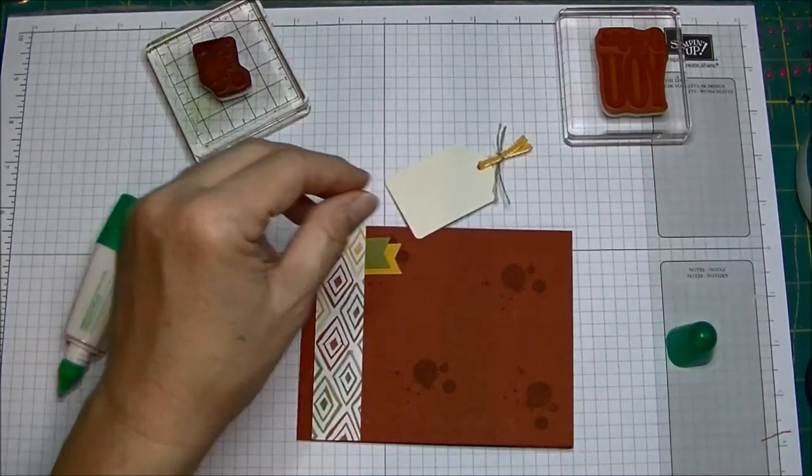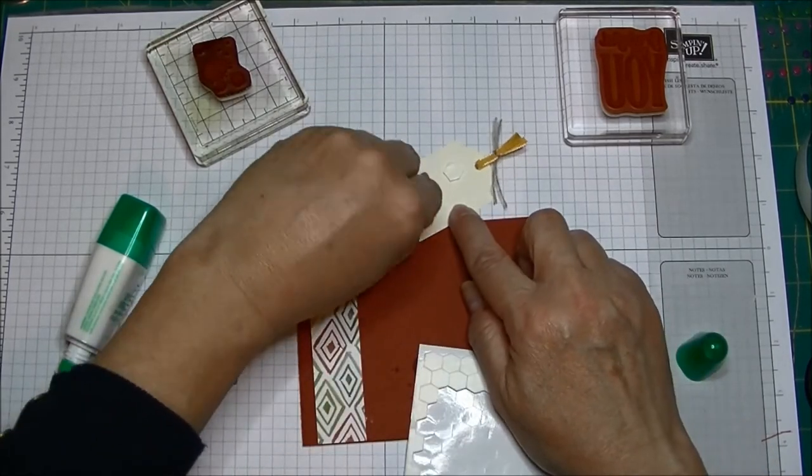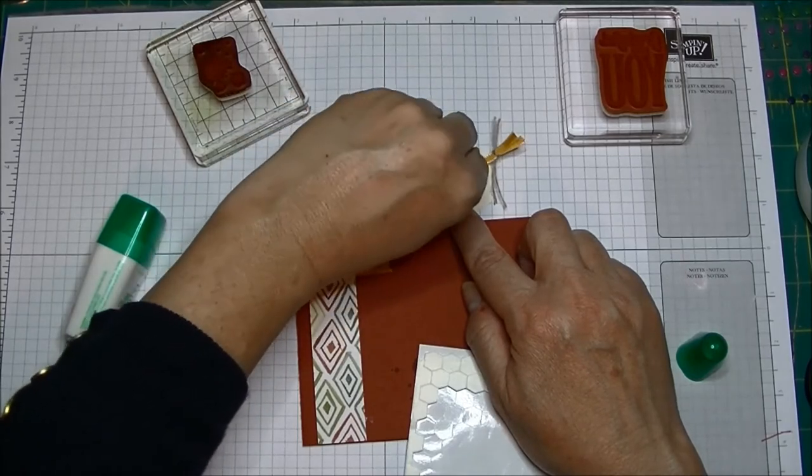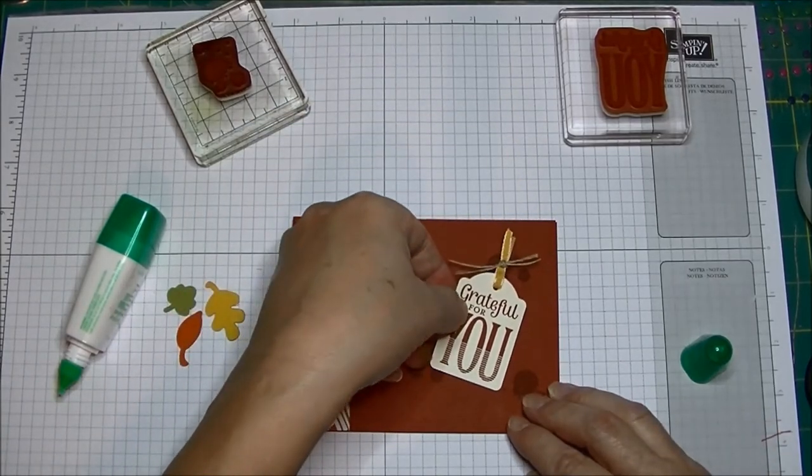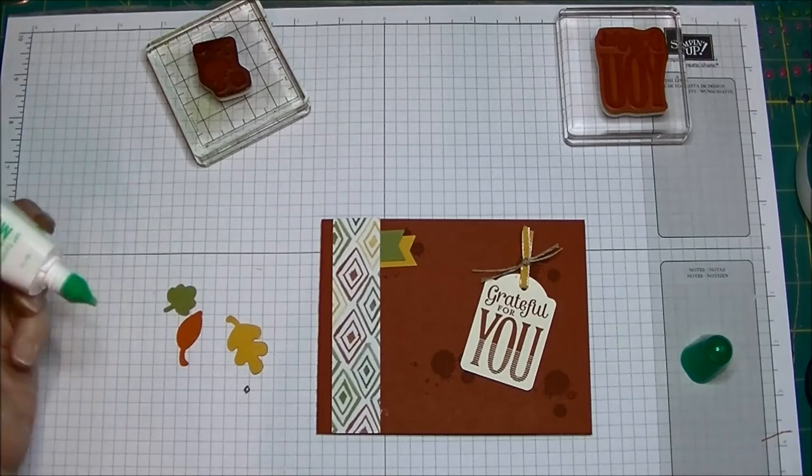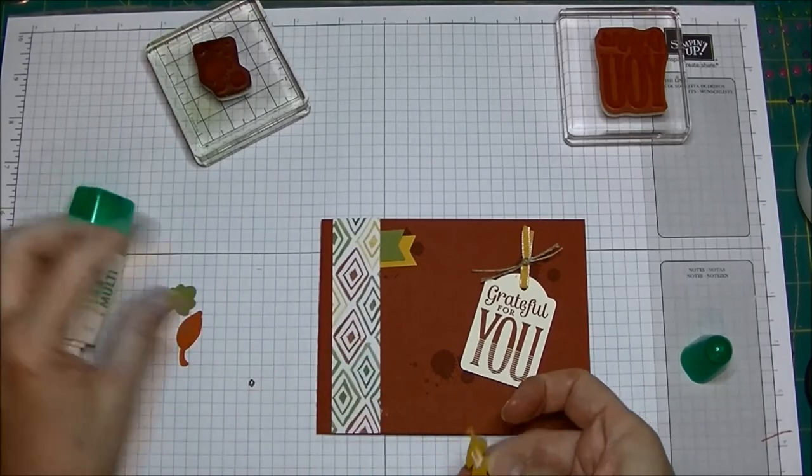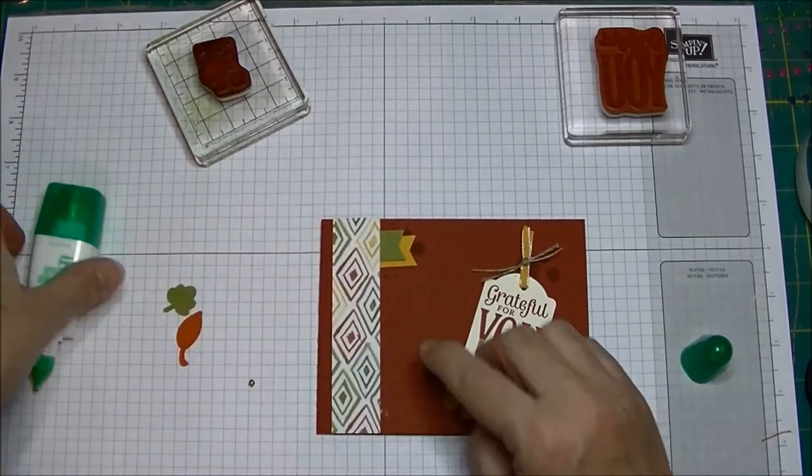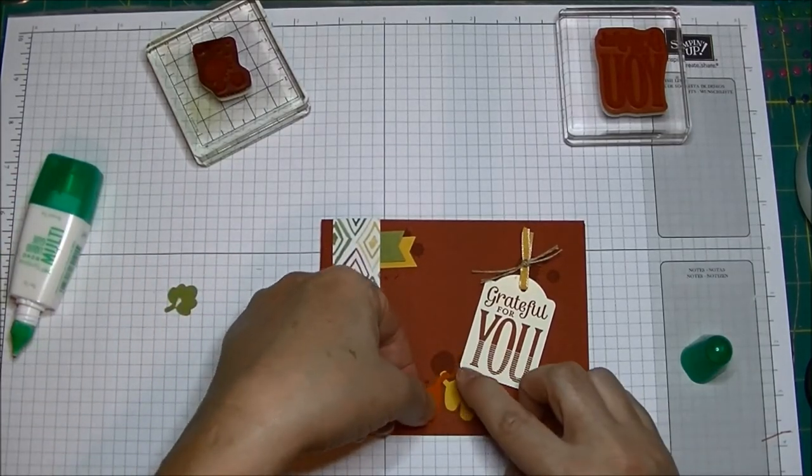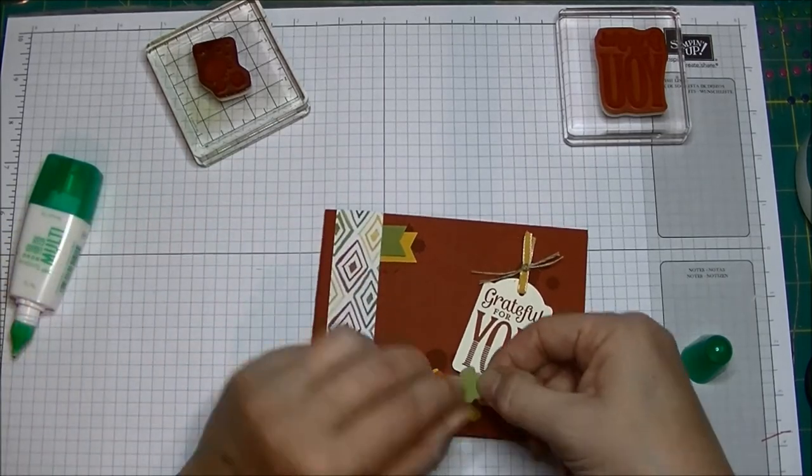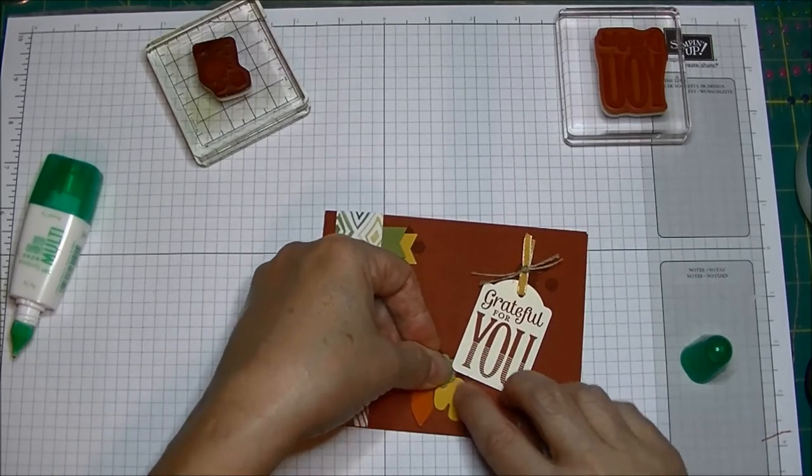Now I'm going to take a couple of dimensionals and add the dimensionals to the back of this. I'm really modifying this sketch a lot because I'm not using the on film framelits. So I'm just going to put this right here like this and then I'm just going to add some glue and put these around toward the bottom here.